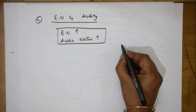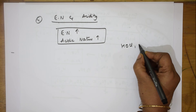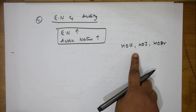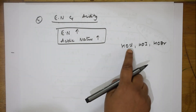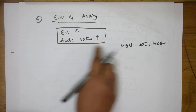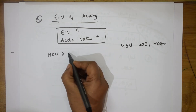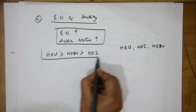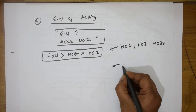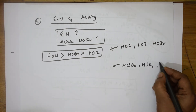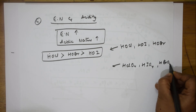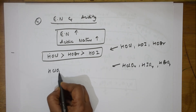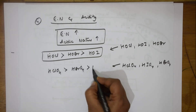Suppose I have HOCl, HOI, and HOBr. Electronegativity order for halogens is: F > Cl > Br > I. So among these, HOCl has chlorine which is more electronegative than bromine and iodine. Therefore HOCl is more acidic than HOBr, which is more acidic than HOI.